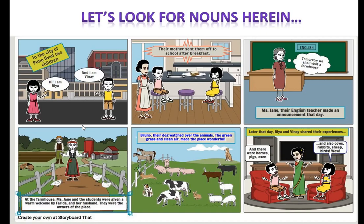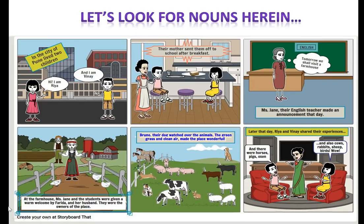Later that day, in the sixth scene, Rhea and Vinay shared their experiences. Vinay said there were horses, pigs, oxen. And Rhea said there were also cows, rabbits, sheep, birds.